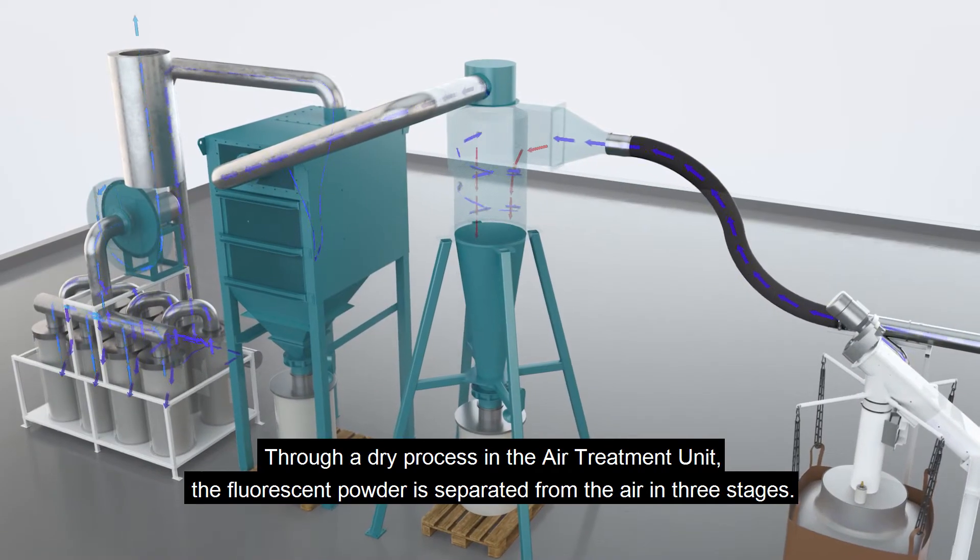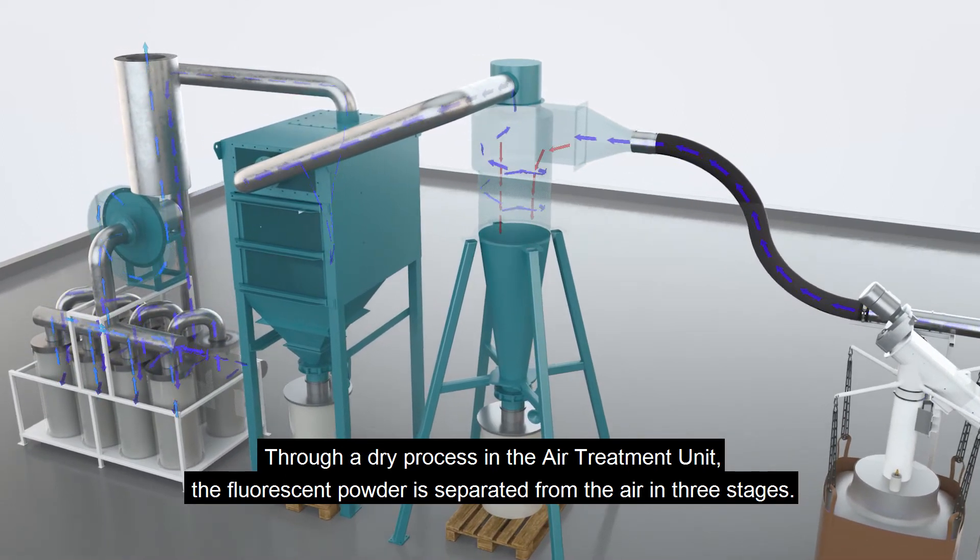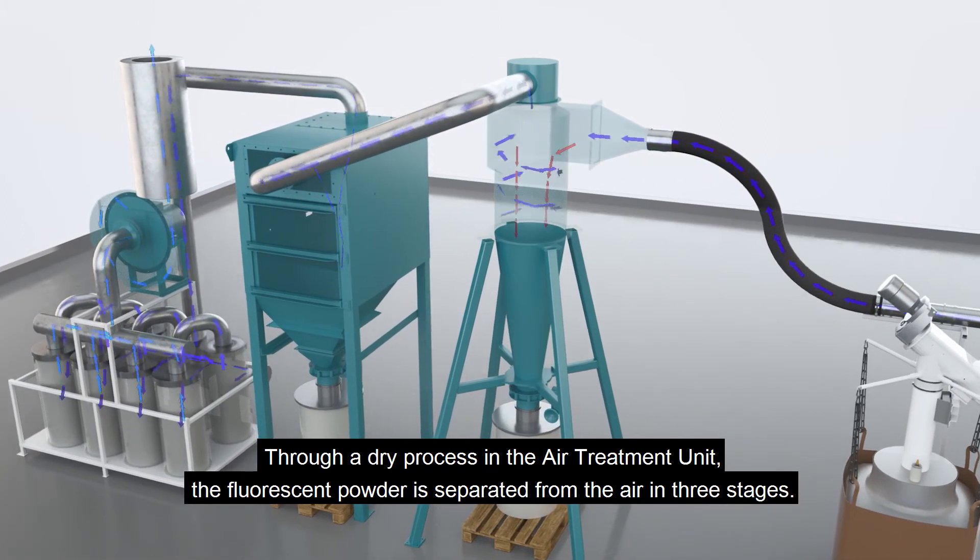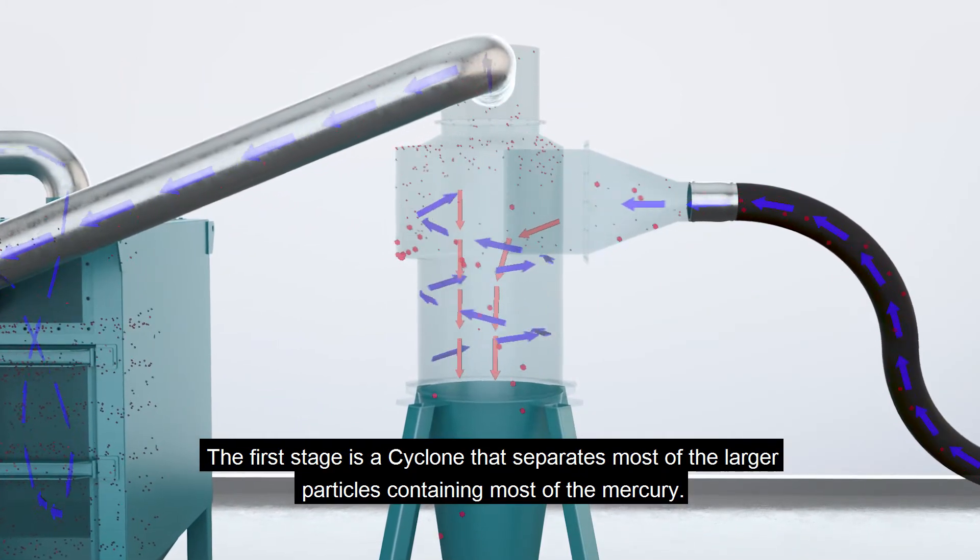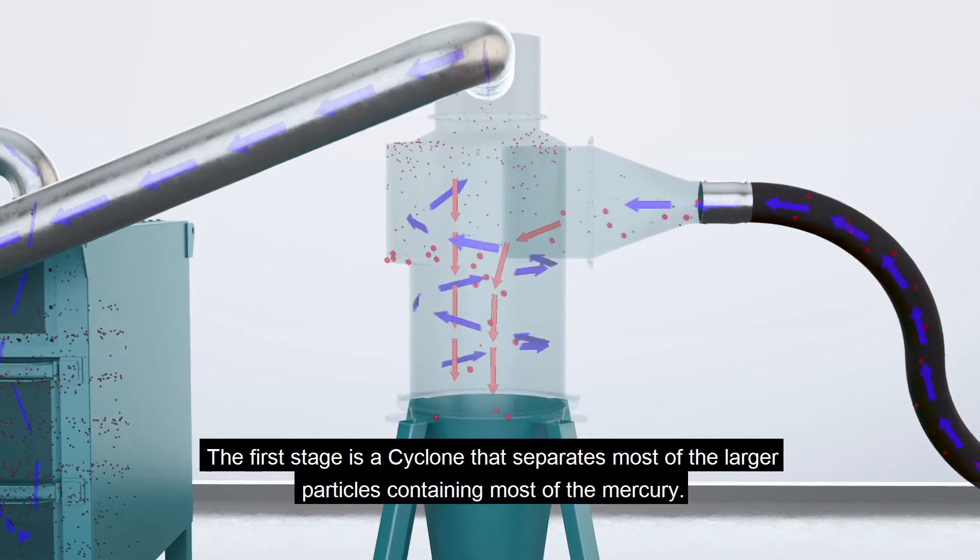Through a dry process in the air treatment unit, the fluorescent powder is separated from the air in three stages. The first stage is a cyclone that separates most of the larger particles containing most of the mercury.